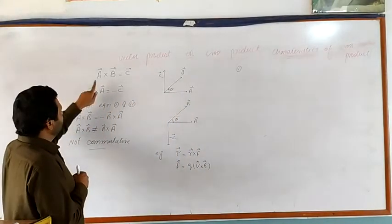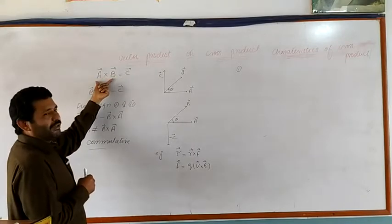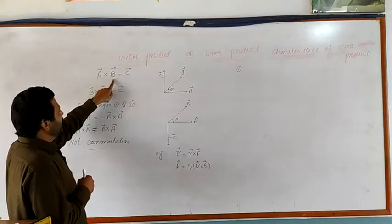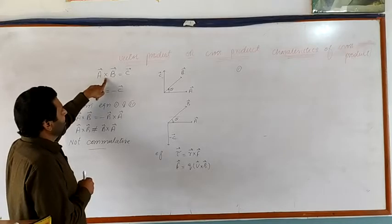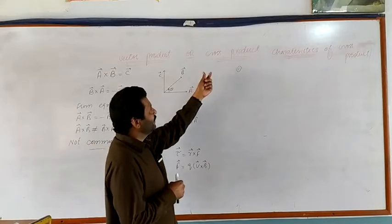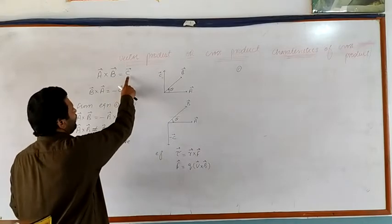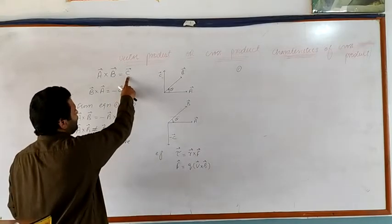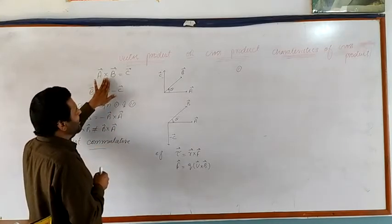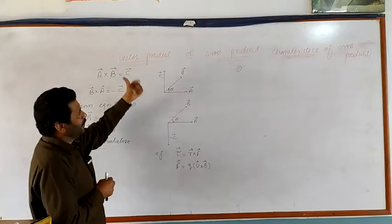We have supposed two vectors, Vector A and Vector B which are to be multiplied. We multiply these two vectors by putting a sign of cross between them, so such product is named as cross product. As the resultant of such product is a vector quantity, suppose the resultant is C, this type of multiplication will also be named as vector product.